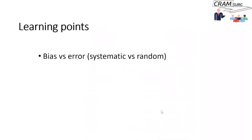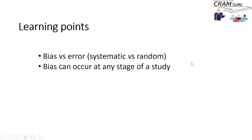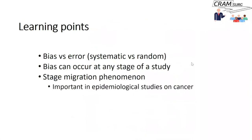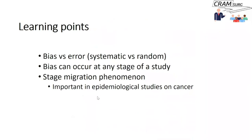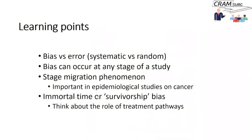So what have we learned today? We've talked about bias, the types of bias, and the fact that bias can occur anywhere along the course of a clinical study — bias is systematic while error is random. We've discussed the stage migration phenomenon, also called the Will Rogers phenomenon, which is important in epidemiological studies on cancer. And we've discussed immortal time bias or survivorship bias — think carefully about treatment pathways and how patients end up on specific treatments, especially surgery versus non-surgical treatment. Thank you all for tuning in and listening. Until next time, keep CRAMming your life with our surgical podcast.